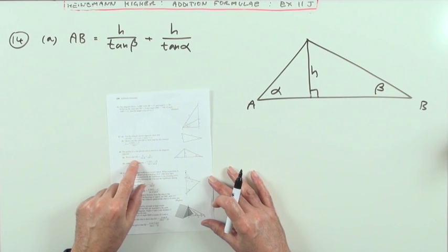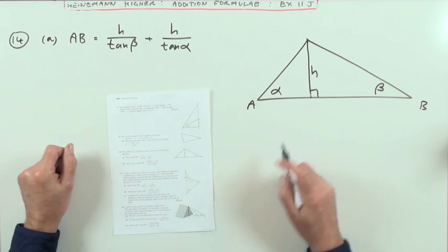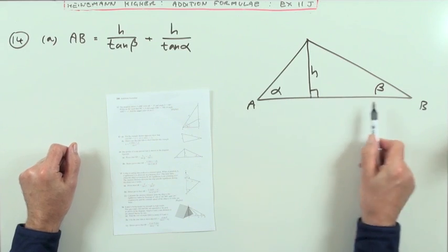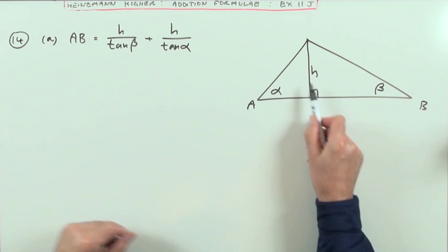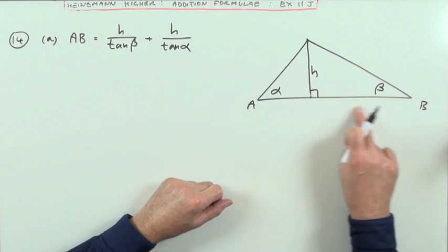Number 14, part (a): you've just approved that AB, the length of the base of this triangle, is given by this expression where h is the height of the triangle and alpha and beta are the base angles. Well, that's just the case of simple angle trigonometry.